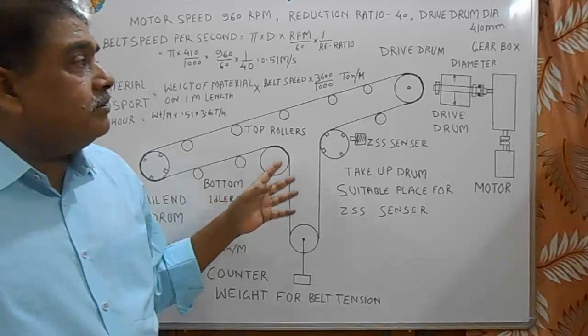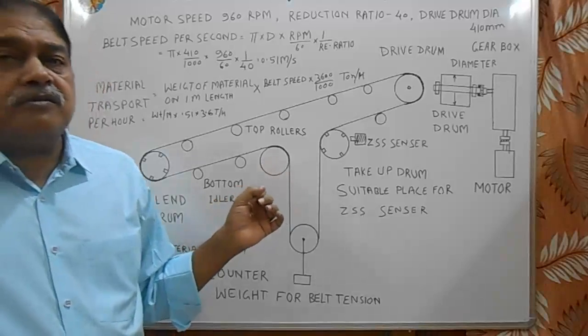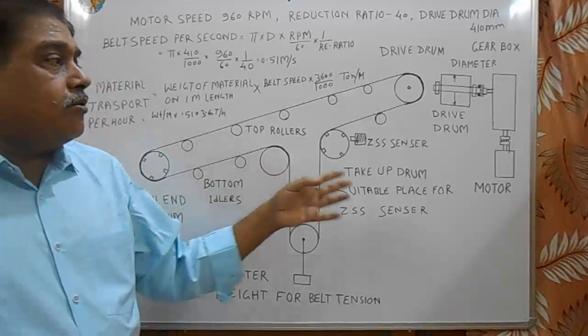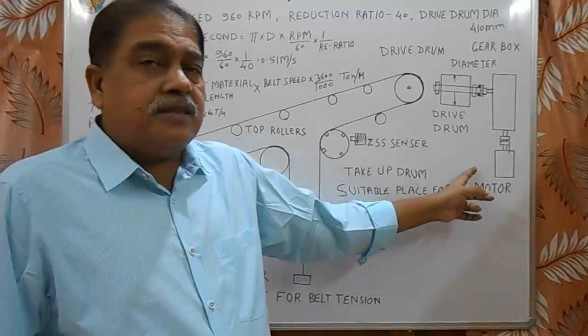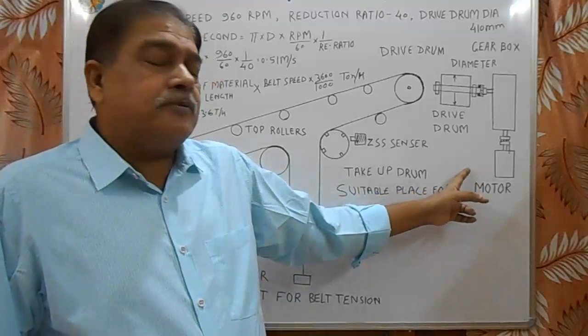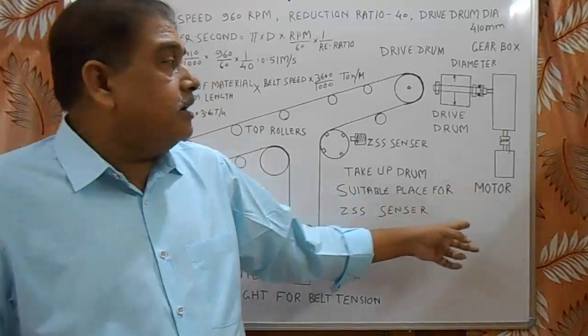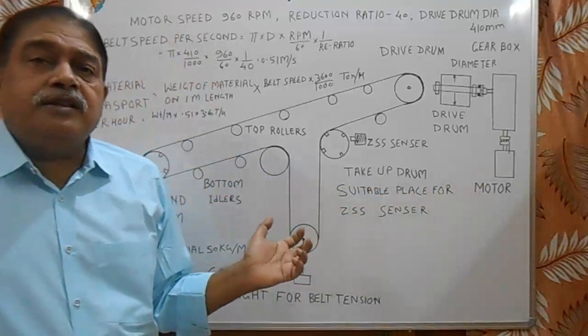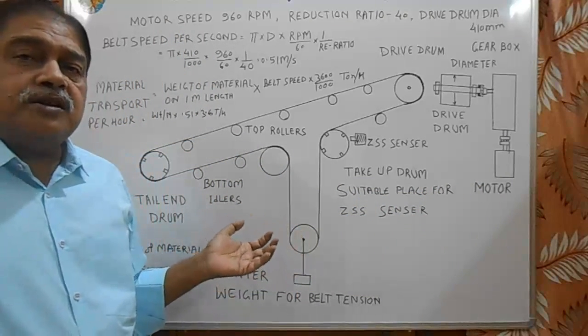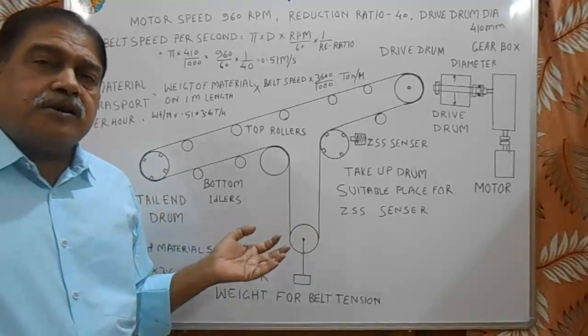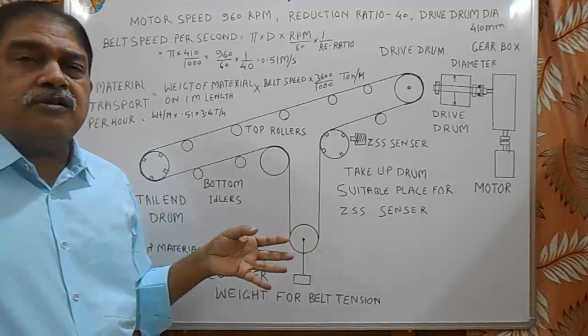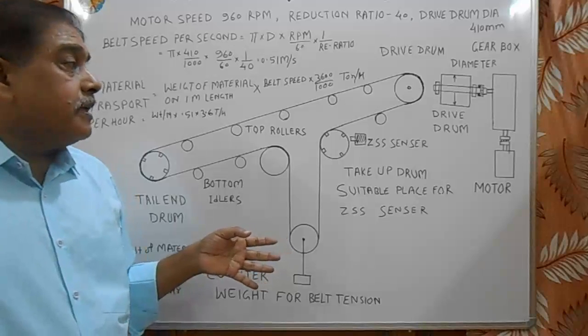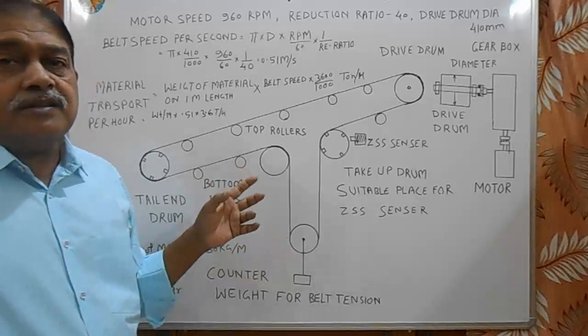In addition to these, there are two types of controls. First is local control near the motor. Here near the motor there are emergency stop push button, start push button and stop push button. And there is a control room where in the control desk there is remote start button, remote stop button, and one auto-local selection switch. And there are indications in the panel.